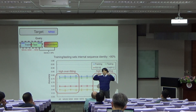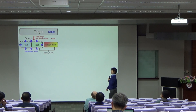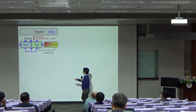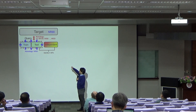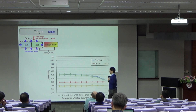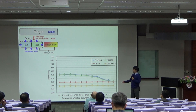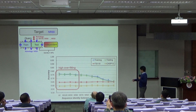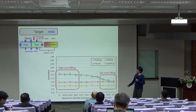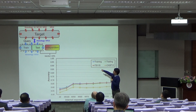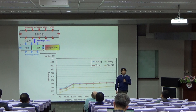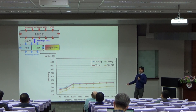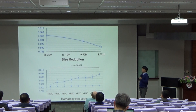We examined all dataset relationships and found many interesting results. If we reduce the homology between the target dataset and the query datasets: when the sequence identity level was high, overfitting was also high; but when the homology redundancy between them was low, overfitting was very low. And if we reduced the homology inside the target database, the accuracy of training, testing, and independent tests would all be increased.